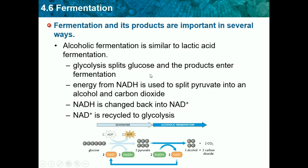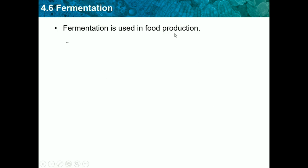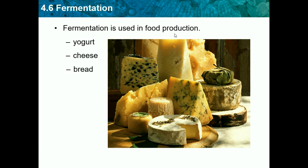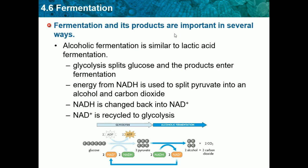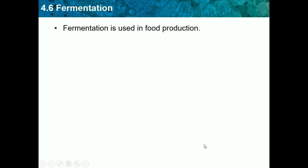Alcoholic fermentation is important in food production. It's used in products like yogurt, cheese, and bread, and also to make pizza dough rise. When yeast is added to pizza dough and put in the oven, the yeast performs glycolysis — breaking down the sugar and producing two pyruvate — and then fermentation converts the pyruvate into alcohol and carbon dioxide using NADH. The CO2 is what causes the dough to rise.